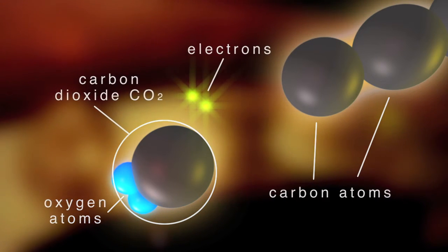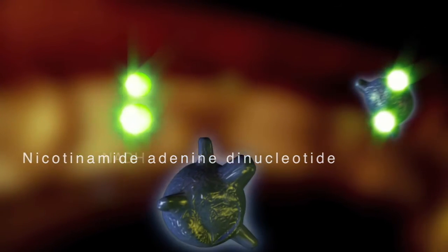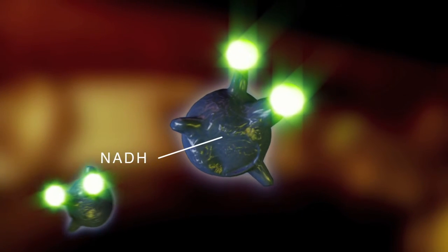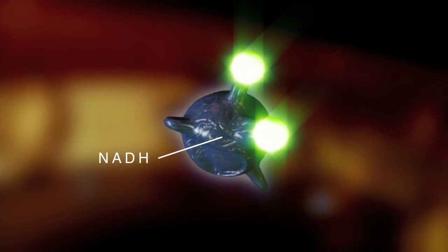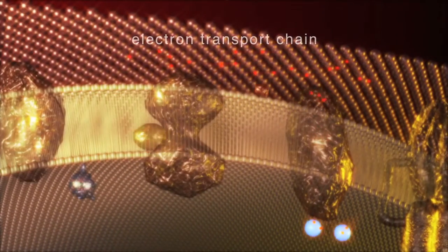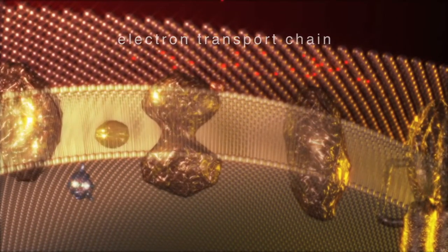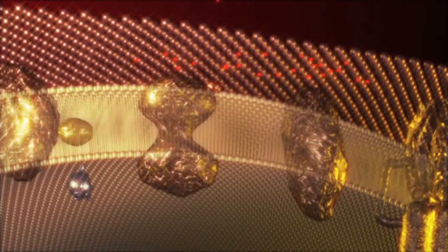Their electrons are captured by specialised carriers such as nicotinamide adenine dinucleotide, or NADH. Electron carriers such as NADH then deliver these electrons to the electron transport chain, which is embedded in the inner membrane of the mitochondria.